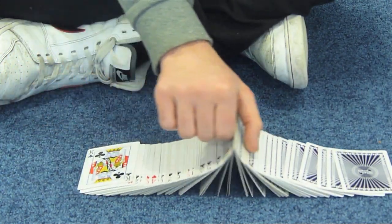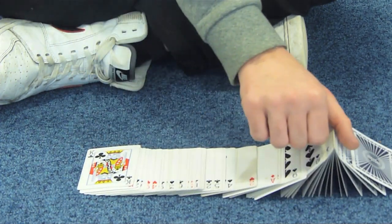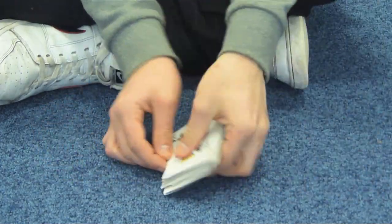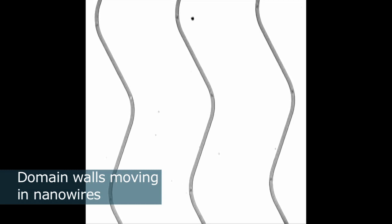Here, the peak in the playing cards represents a domain wall. In nanowires, as in the cards, structures can move while the material stays still. Images taken by Glasgow's electron microscope can actually show these domain walls in motion.